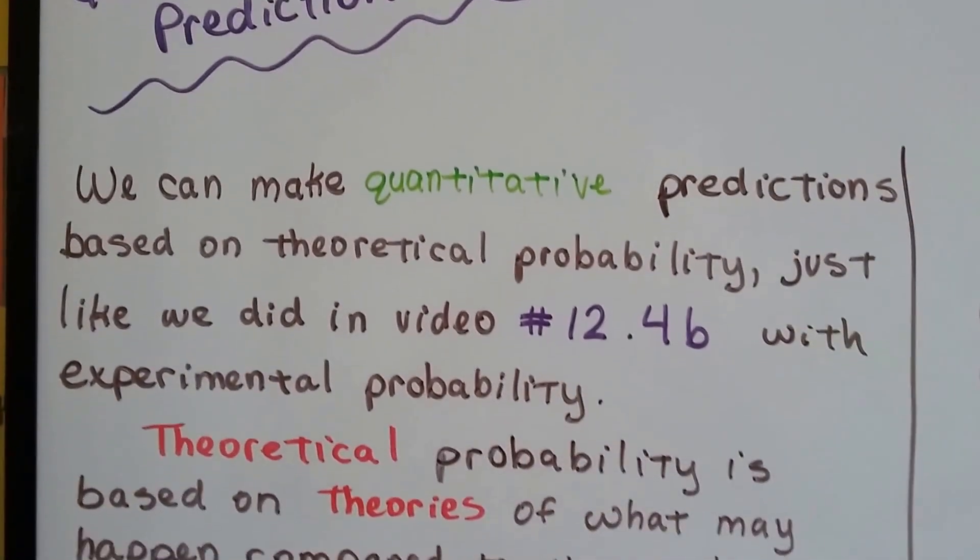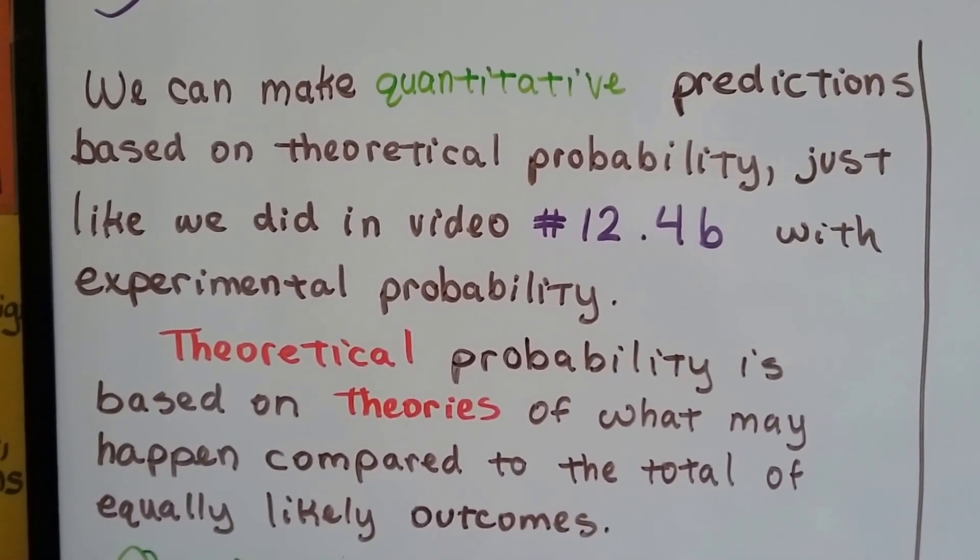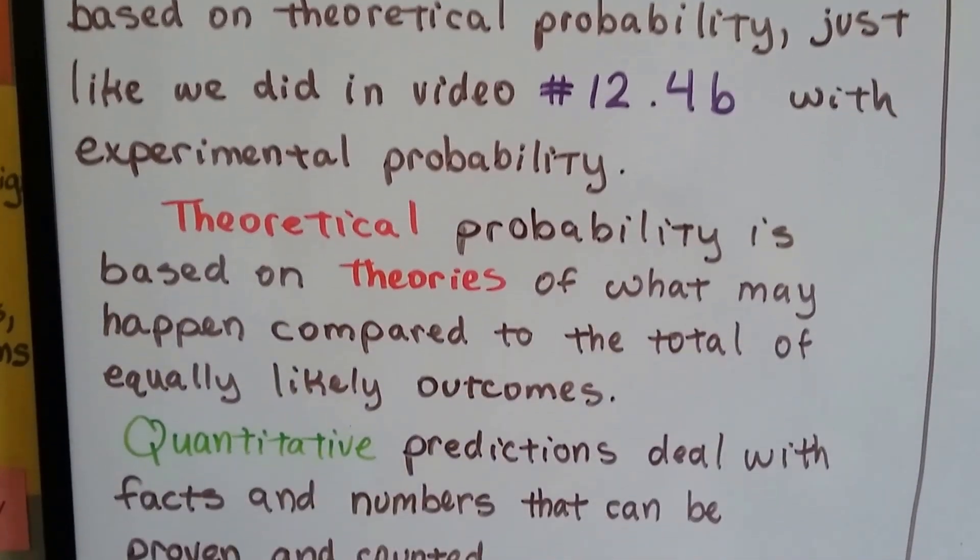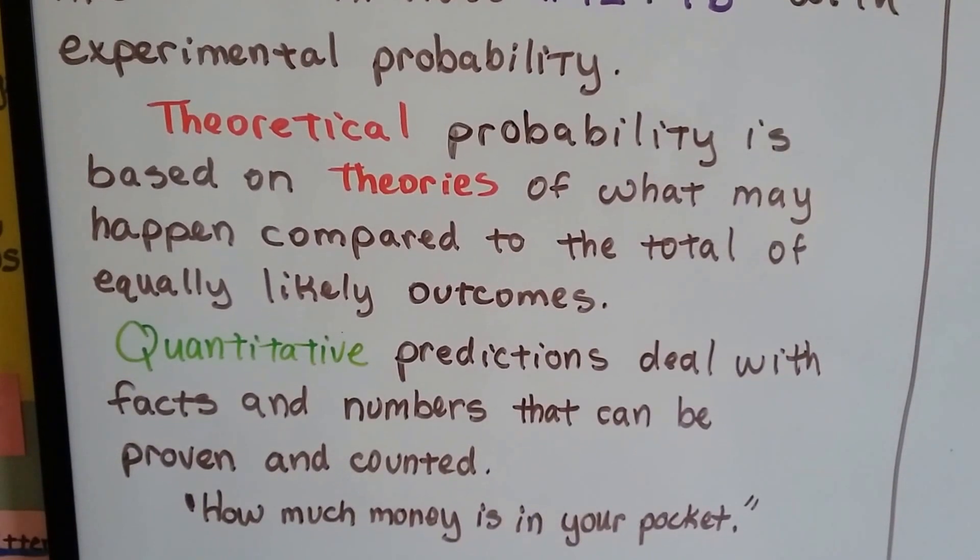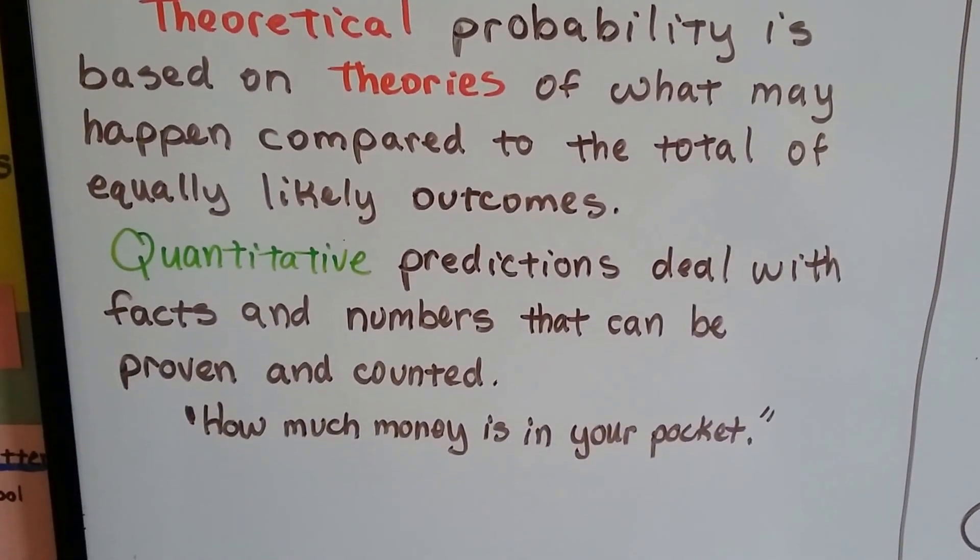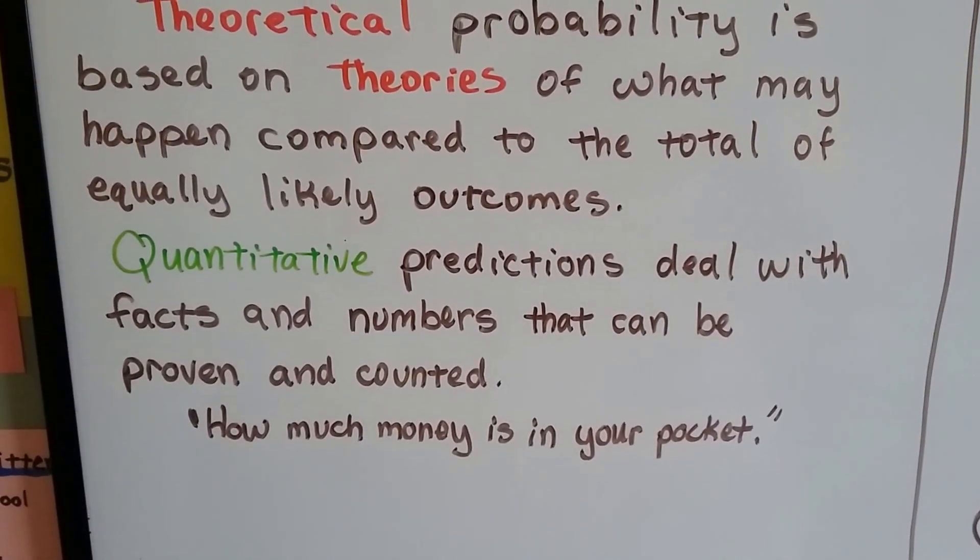We can make quantitative predictions based on theoretical probability, just like we did in video 12.4b with experimental probability. Theoretical probability is based on theories of what may happen compared to the total of equally likely outcomes. Quantitative predictions deal with facts and numbers that can be proven and counted, like how much money is in your pocket.